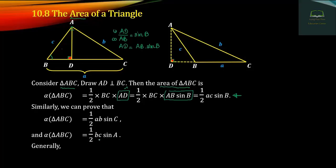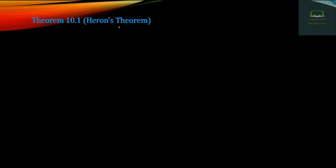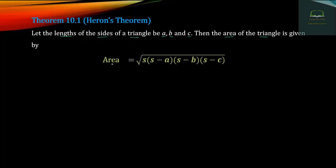The area of triangle ABC is one half times the product of the lengths of two sides times the sine of the included angle. The area squared equals S into S minus A into S minus B into S minus C.